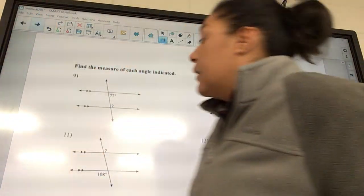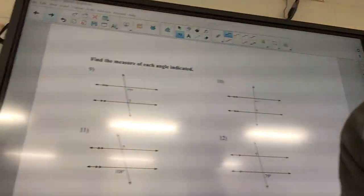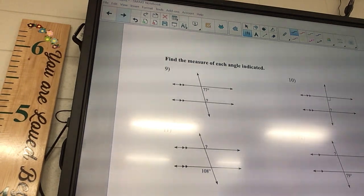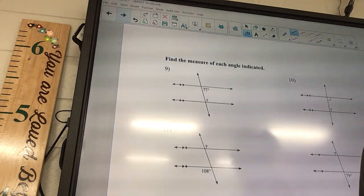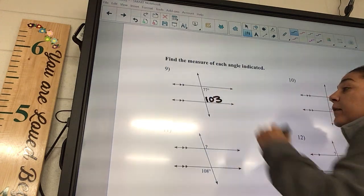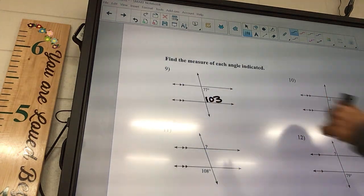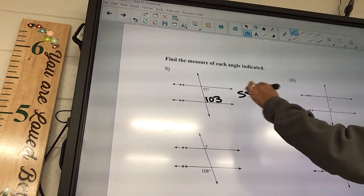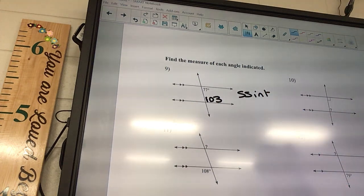Okay, so for number nine we're going to say 180 minus 77. What does that give you? 103. Okay, so 103. And if you need it, you don't have to put this part, but this is the same side interior.